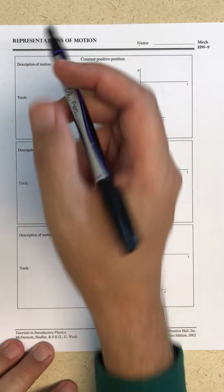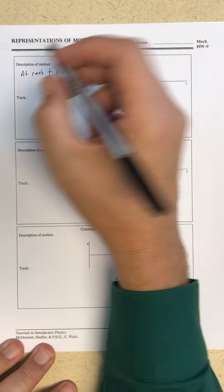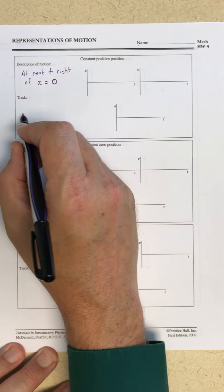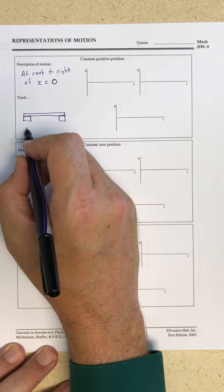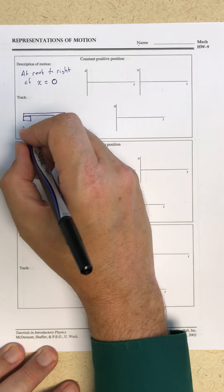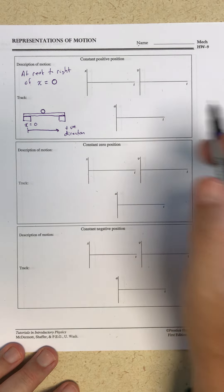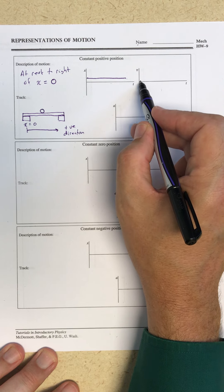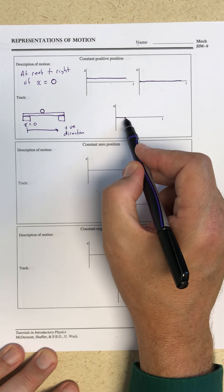Constant positive position means the object is at rest to the right of x equals zero, with no initial velocity. I draw the track and place the ball to the right of the origin. Since there's no slope in position versus time, velocity is identically zero. Since there's no change in velocity versus time, acceleration is identically zero.